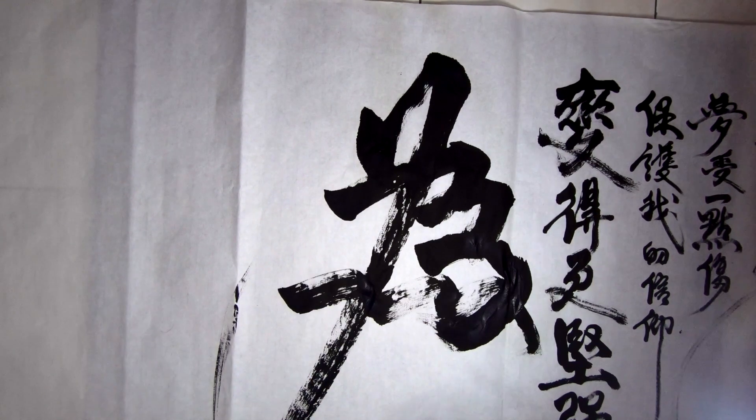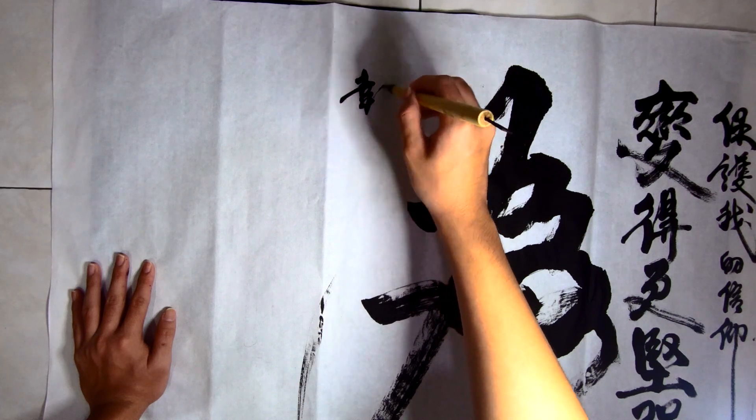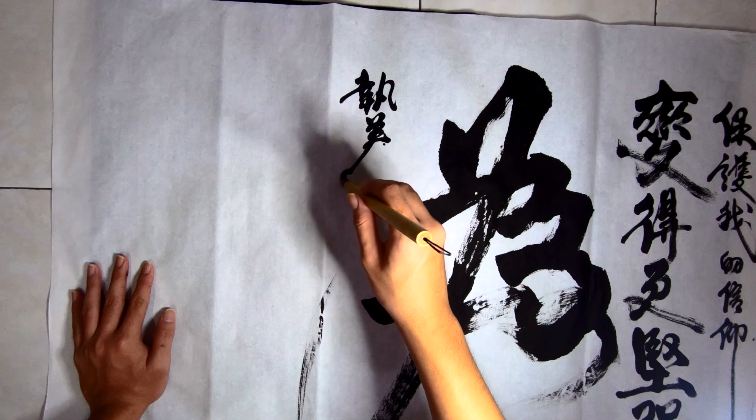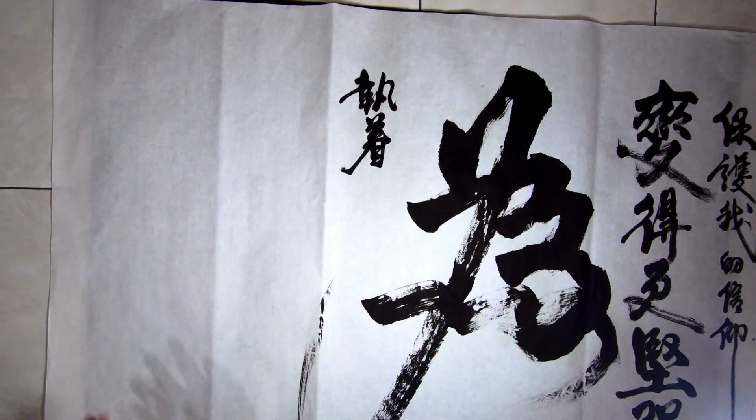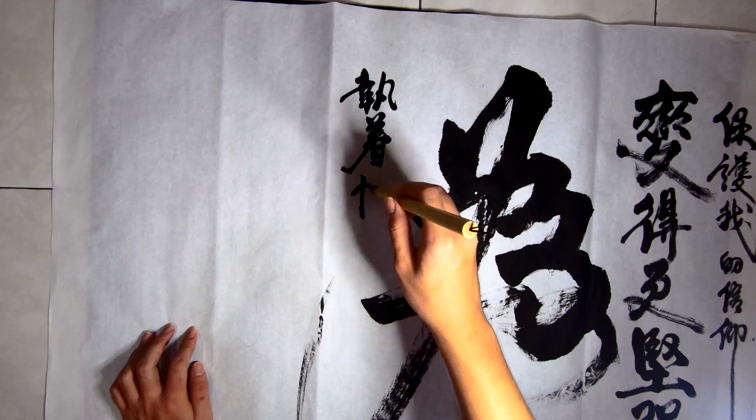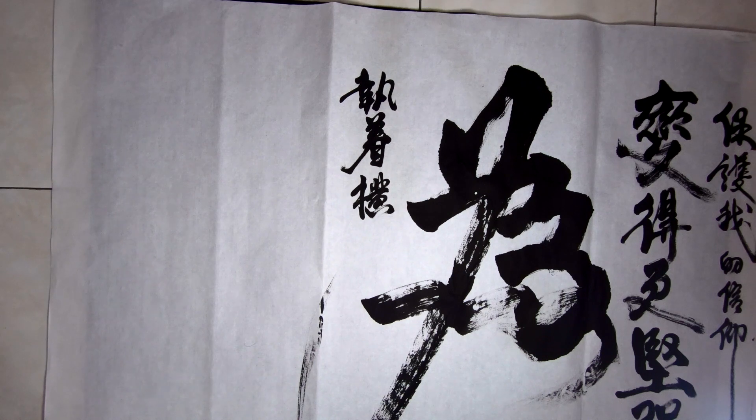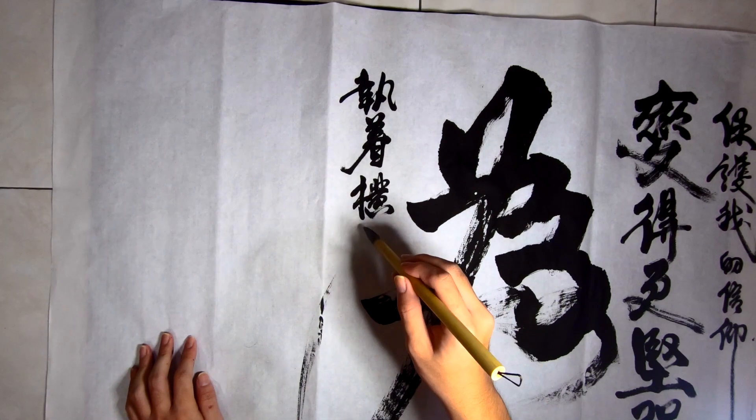This is the part where the mistake really shows itself. As you can see, when I'm writing the small prints, the prints start to look smaller and smaller because I'm trying to cram everything in one place. And this is where everything crumbles down. I do not have enough space to write the remaining words, and it will clash with the big word.